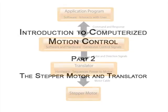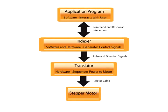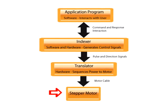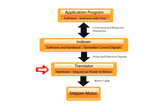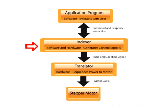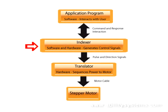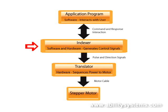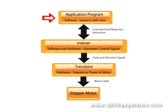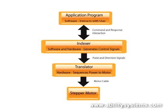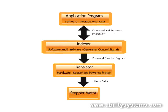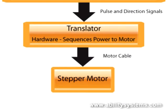The principal elements in a stepper motor control system include the stepper motor itself, the device that powers the stepper motor called a drive or translator, and the device that directs the translator, called an indexer. A full PC-based motion control system, such as one that may control a machine tool, also has an application program that interacts with the human operator. This video concentrates on the stepper motor and its translator.